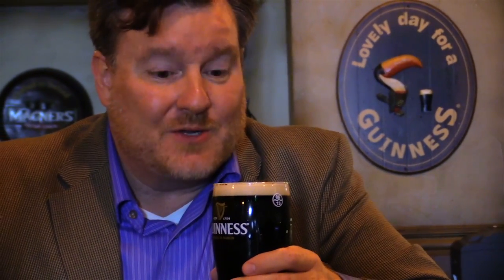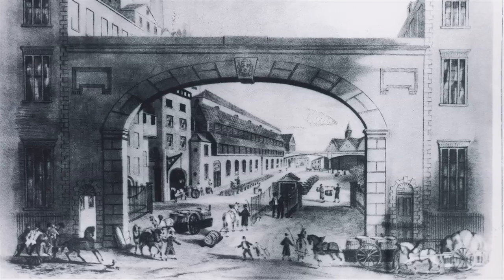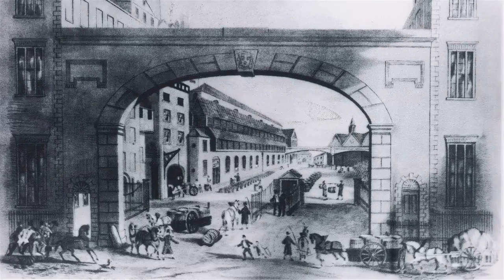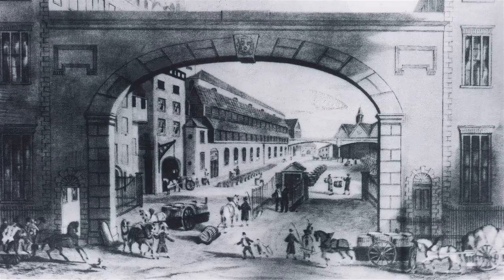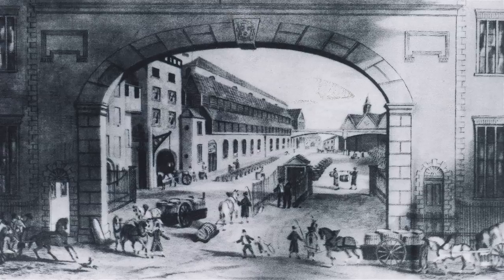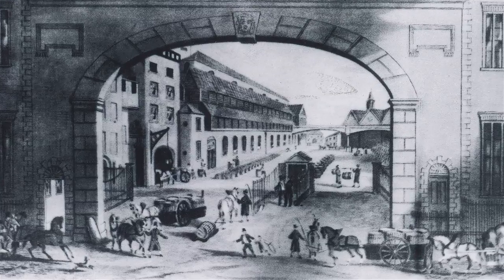As students of statistics, we owe a great debt of gratitude to our friends at the Guinness Brewing Company. There's a lot of science that goes into brewing beer, and in 1903 Guinness got all sciency in creating an experimental malt house at their brewery at St. James's Gate in Dublin, Ireland.